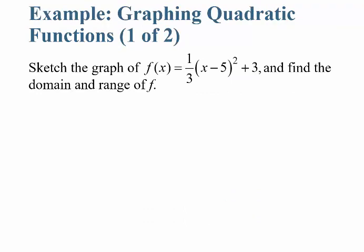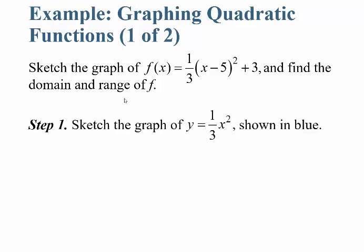Let's sketch the graph of f of x equals 1 third times (x minus 5) squared plus 3, and find the domain and range of this function. Remember, the domain is all the allowable inputs, and the range is what the outputs take on.